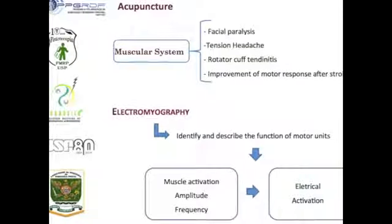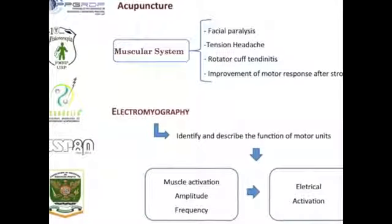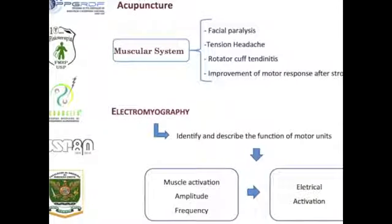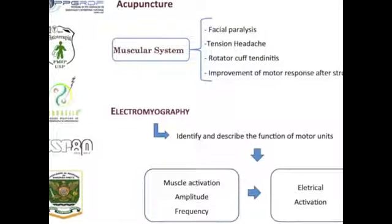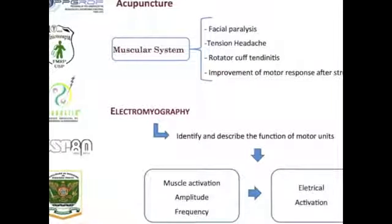The studies that have investigated the effects of acupuncture on the muscular system have used electromyography. This technique enables the identification and description of the function of motor units in terms of muscle activation and the amplitude and frequency of electrical activation.